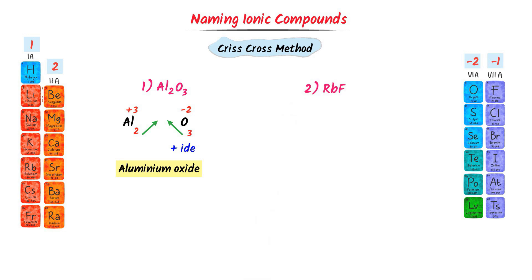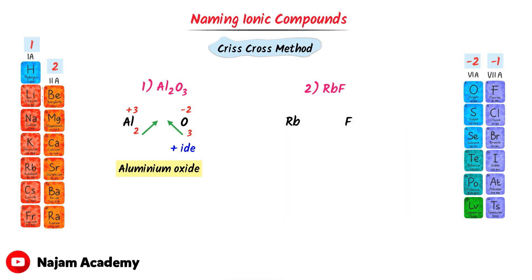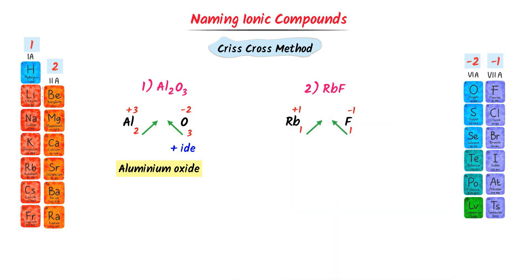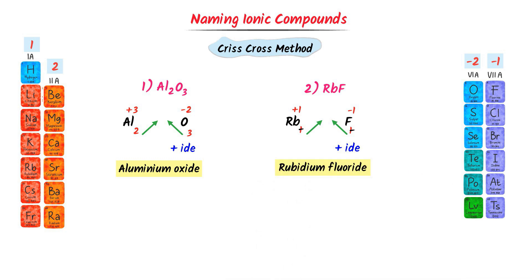For rubidium fluoride: the subscripts are 1 and 1, so rubidium carries +1 charge and fluorine carries −1 charge. Rb stands for rubidium, F stands for fluorine, and we add -IDE at the end — giving rubidium fluoride. Using this simple method, we can easily name any ionic compound.